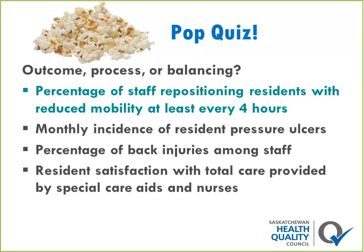Process measure — because it's specific to the task. Correct. What about the monthly incidence of resident pressure ulcers? Outcome — and I would agree. Our goal is to reduce pressure ulcers, so this falls right out of that statement. What about percentage of back injuries among staff? Balancing measure — and I would agree. That might be an unintended consequence if we're asking staff to move patients more. Perhaps that's harder on them and they're getting hurt. And patient satisfaction with care provided? Balancing — again, I agree. We want to make sure patients are still happy even though we've made a change.